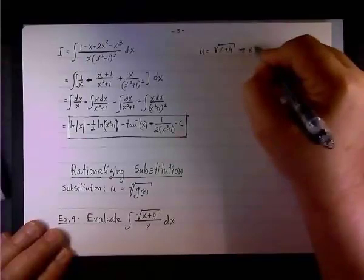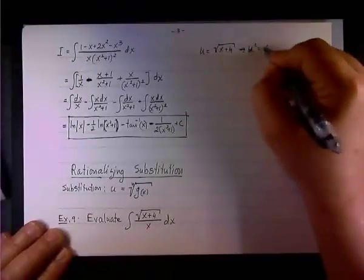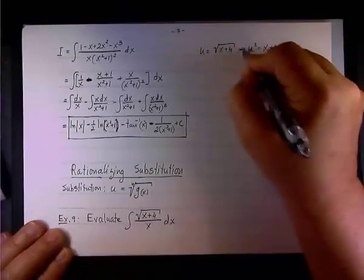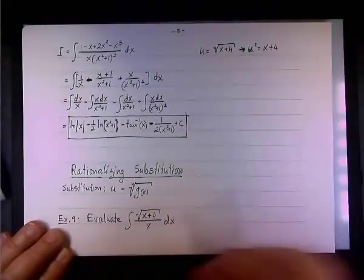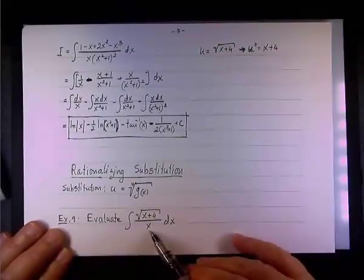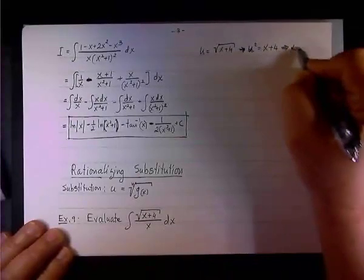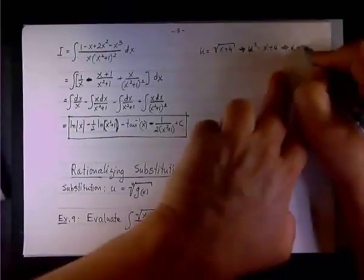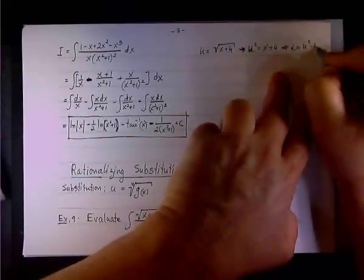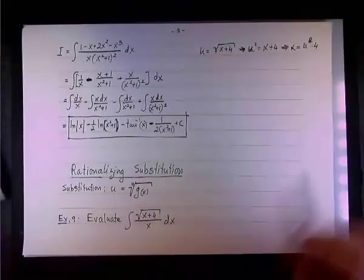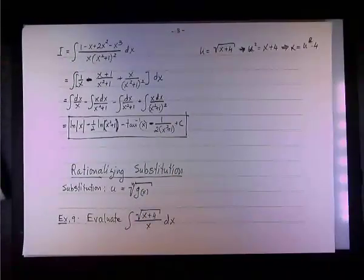So, what we're going to do, we're going to square both sides and say that u squared would be simply x plus 4. This is much better because I have x in the denominator and I can substitute, and I can say that x by itself is going to be u squared minus 4.